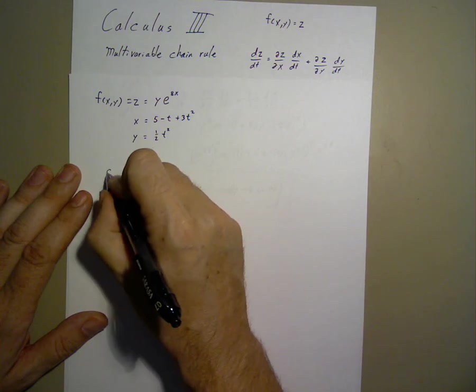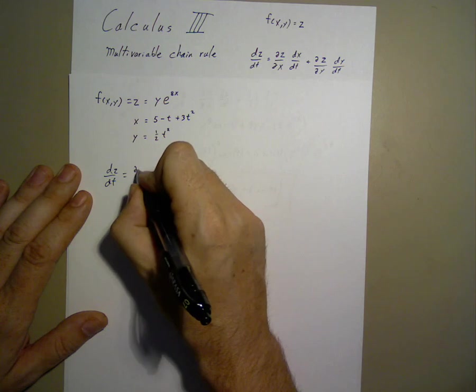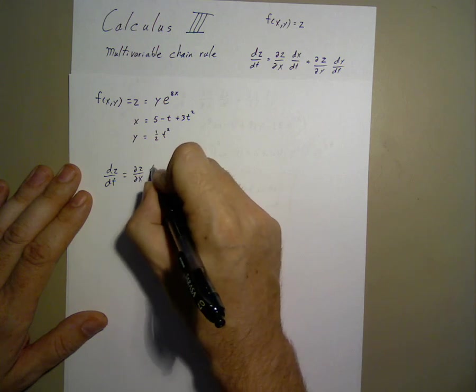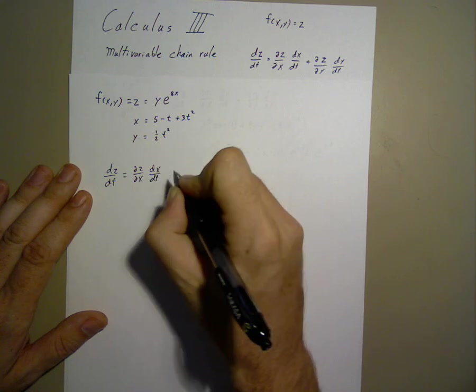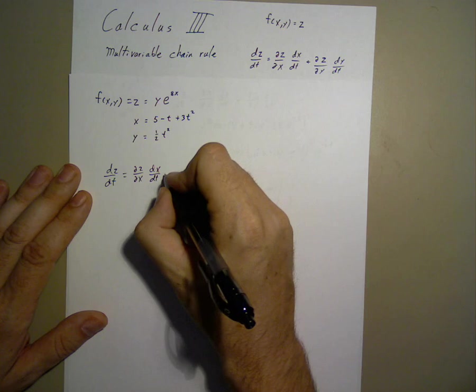Namely, dz/dt equals partial of z with respect to x dx/dt. And of course, this doesn't only work for x and y, but for any variables we may have.